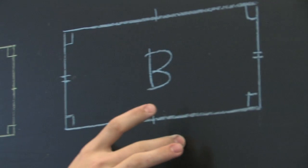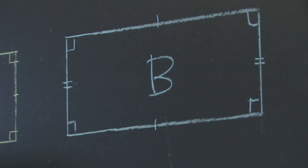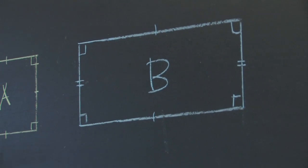We have rectangles, in which opposite sides are of the same length, and all interior angles are 90 degrees.